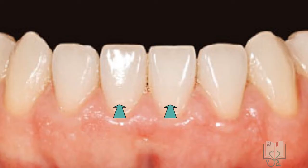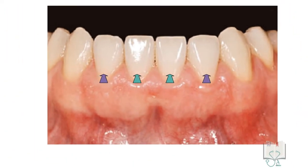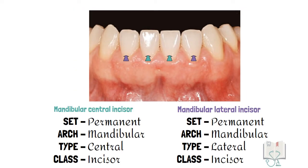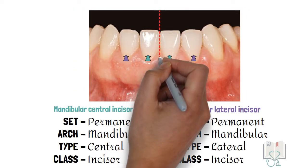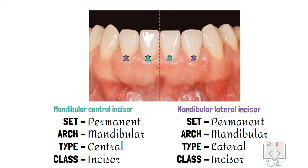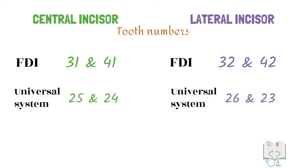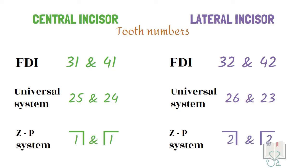Features of mandibular central incisor and lateral incisor are very similar, which makes it important to know even the minute differences present. Some general features to begin with: mandibular central incisor is the first tooth from the midline and lateral incisor is the second tooth from the midline. This difference in position changes their tooth numbers in various tooth numbering systems.